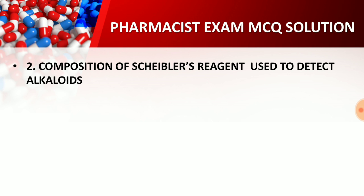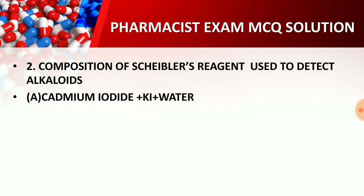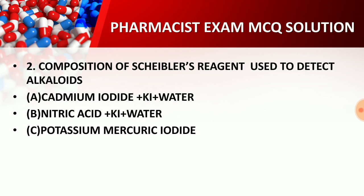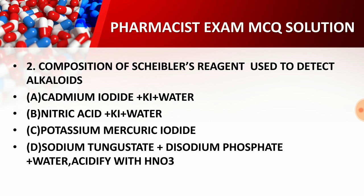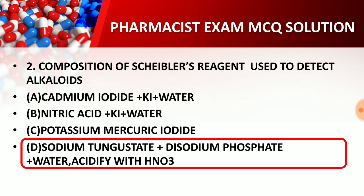Question two: The composition of Schiller's reagent used to detect alkaloids is — option A: cadmium iodide plus KI plus water; option B: nitric acid plus KI plus water; option C: potassium mercury iodide; option D: sodium tungstate plus diphosphate plus water acidified with HNO3. The right answer is option D.